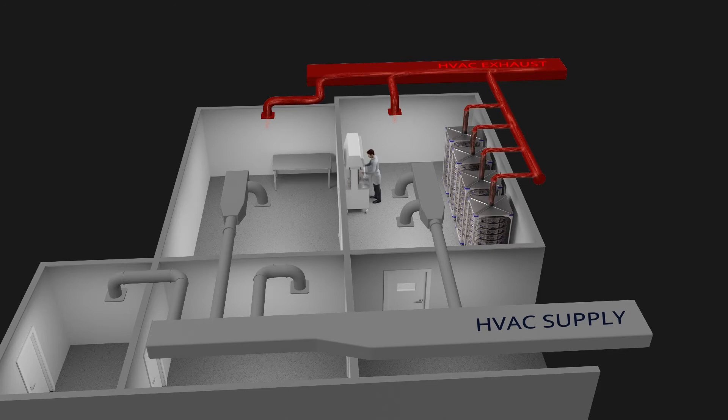Each rack is connected by hoses to the building's exhaust system through connectors or ceiling drops.